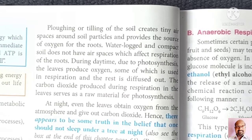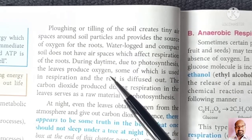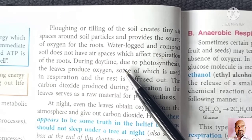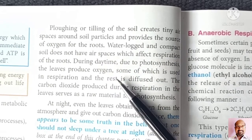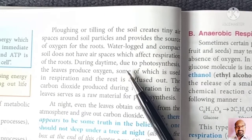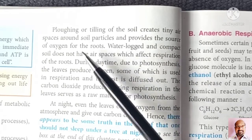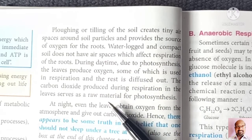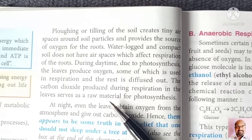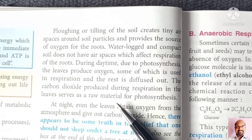Now, do you know why tilling or plowing of soil is done? This is done to loosen the soil. Loose soil can trap oxygen, which is required for the process of respiration. This oxygen trapped in soil is utilized by the roots for respiration. That's why plowing or tilling is done. Waterlogged or dry soils have no oxygen, so it reduces the process of respiration.